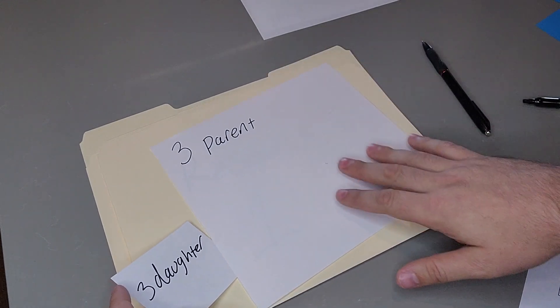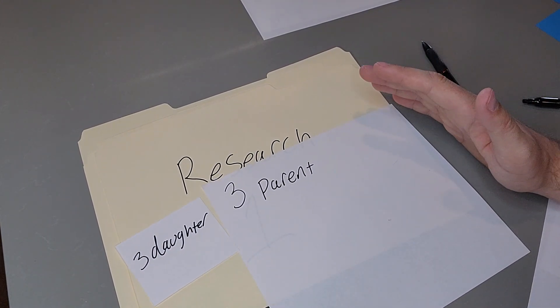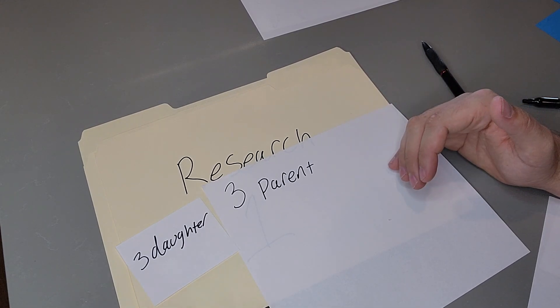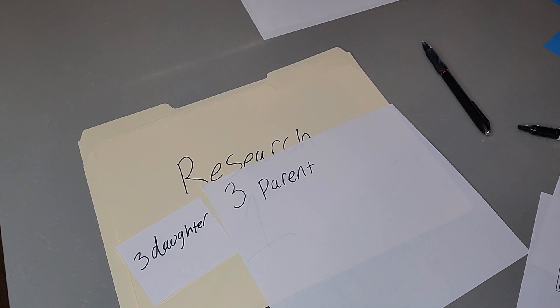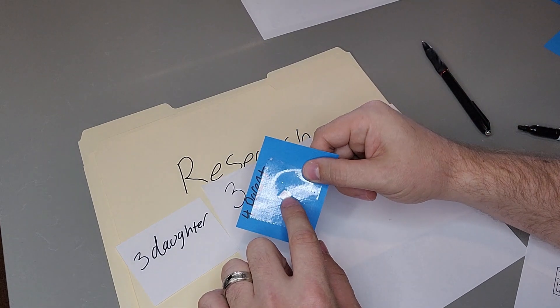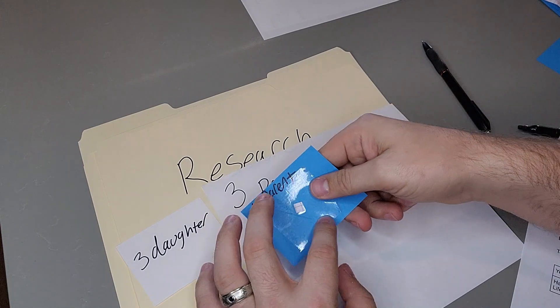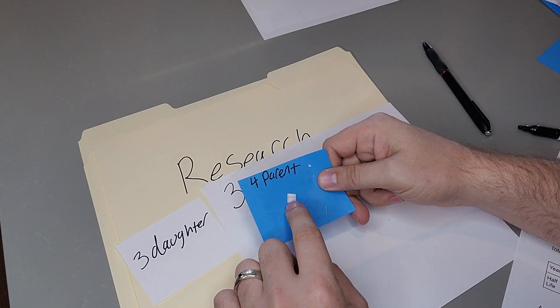Other things you can do for math or science is you can have them practice measuring. Notice on this, there are no squares, so they would have to actually measure this. They can use the metric centimeter side or they can use the inches side. They'll get the same answer because this is all about ratios. I also recommend getting samples that are really small like this. I taped this on a piece of paper so I won't lose it, but you can keep going smaller and smaller than this sample.